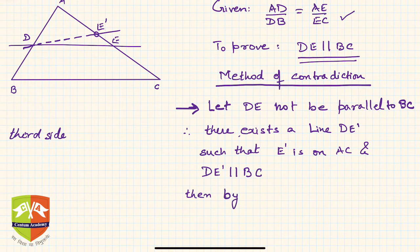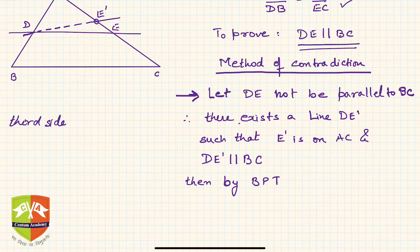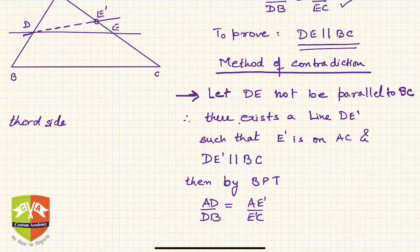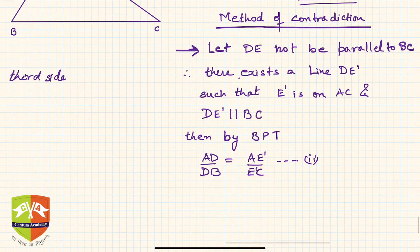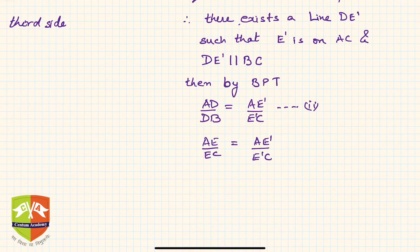Now, if DE' is parallel to BC, then by BPT — which we have already proven — if DE' is parallel to BC in triangle ABC, then AD/DB = AE'/E'C. Let's call the given condition equation (1) and this result equation (2). Since the left-hand sides of equations (1) and (2) are the same, we can equate the right-hand sides: AE/EC = AE'/E'C.